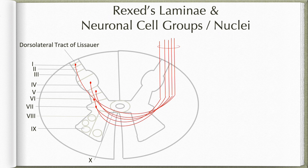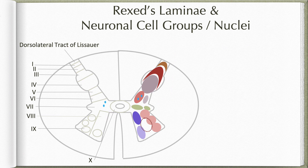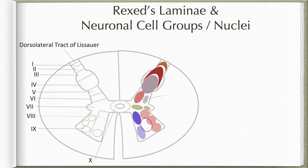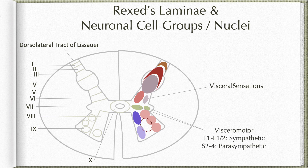Understanding these laminae and nuclear groups gives us an idea of where the fibers forming a particular tract originate. For example, the anterolateral pathway fibers originate from laminae 1, 4, 5, 6, 7 and 8. Similarly, Clarke's column corresponding to lamina 7 sends fibers into the spinocerebellar pathway, and the visceral grey as well as the intermediomedial and intermediolateral nuclei are involved in visceral sensations and visceromotor supply, whether sympathetic or parasympathetic.